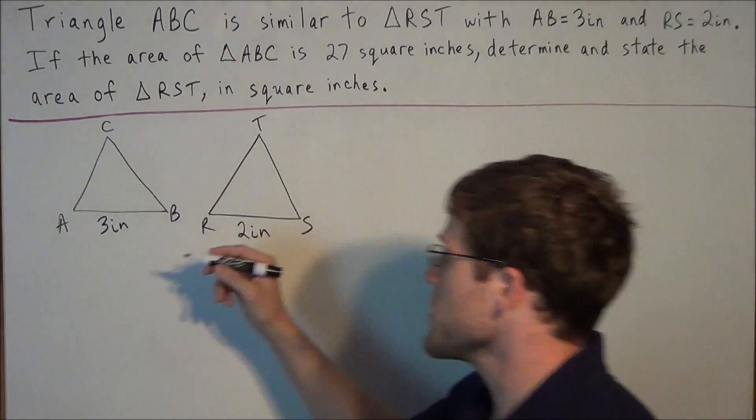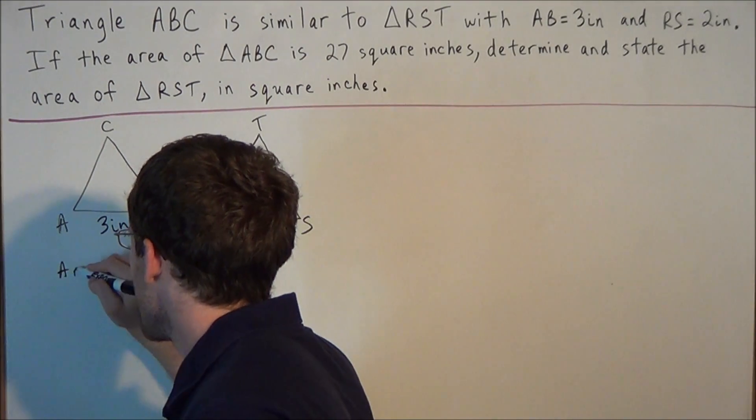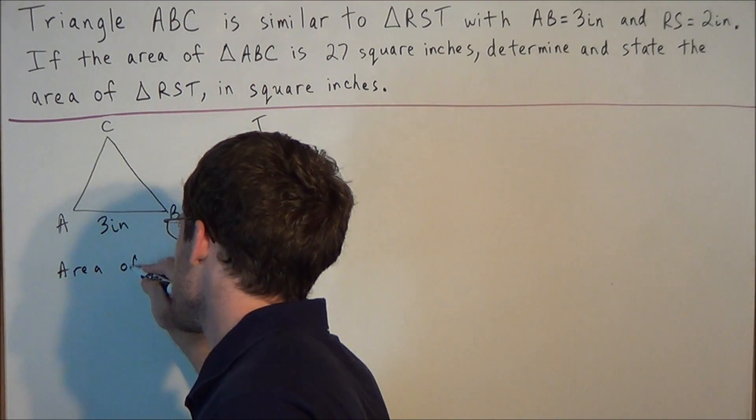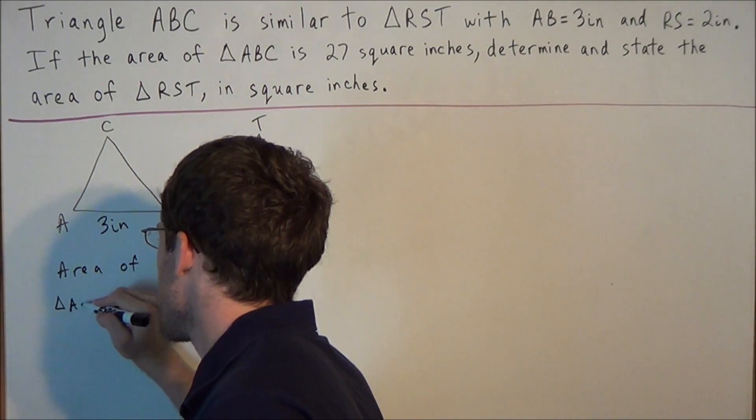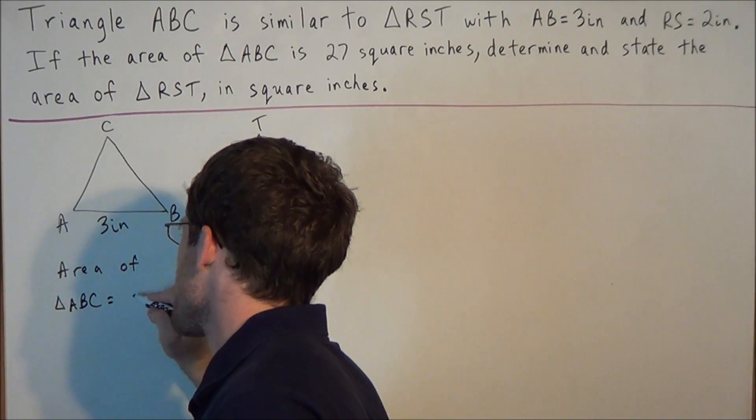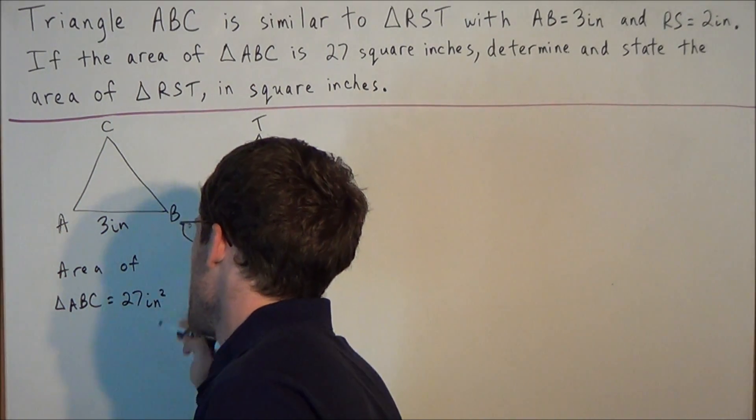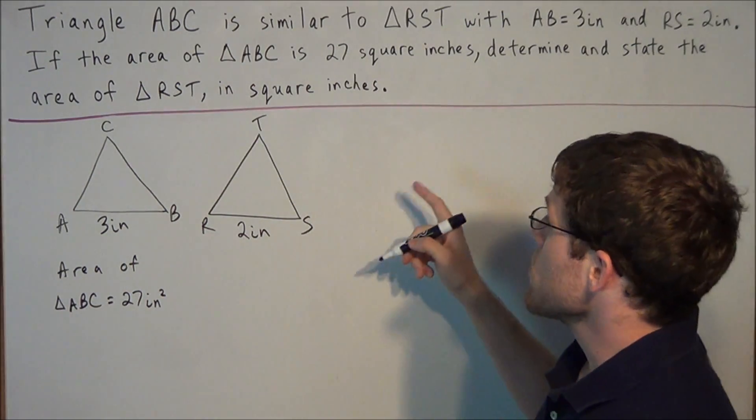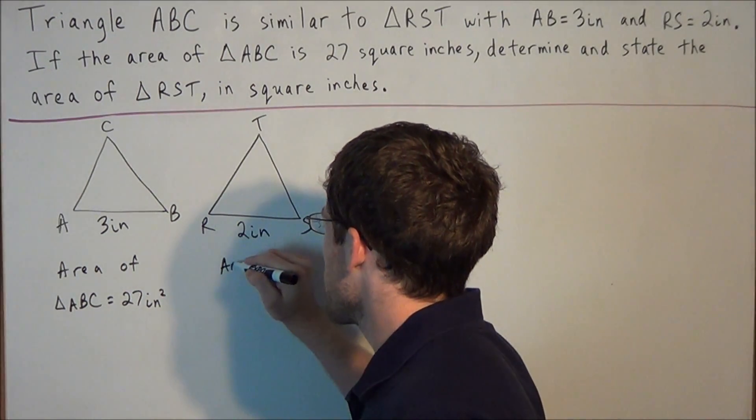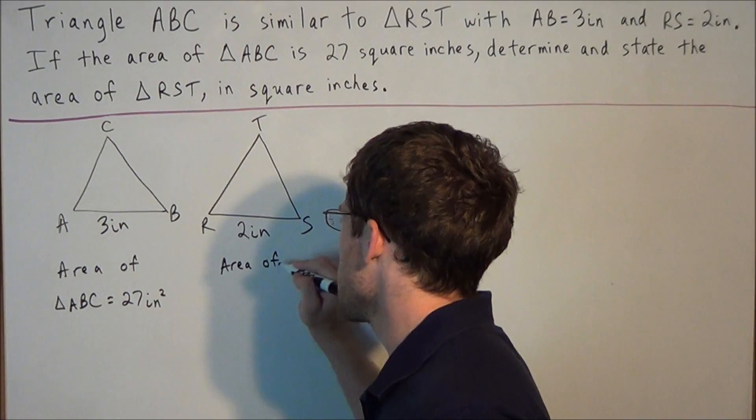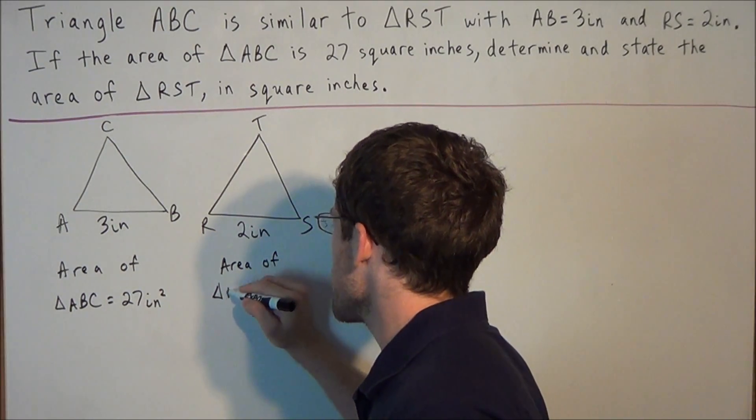And we're also told that the area of triangle ABC equals 27 square inches. And now the goal is to find the area of triangle RST.